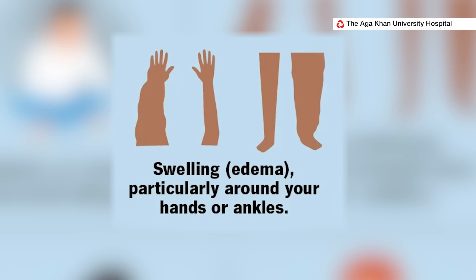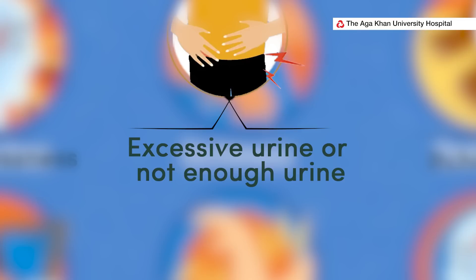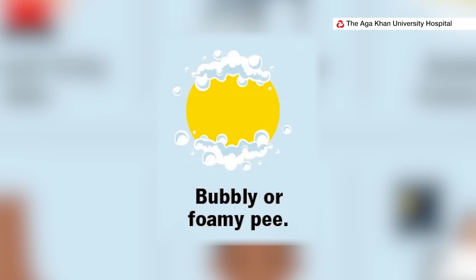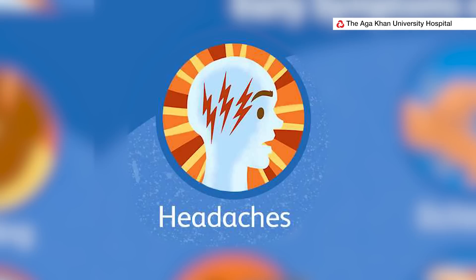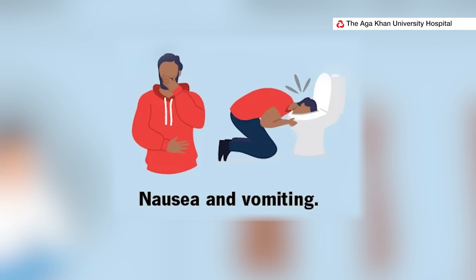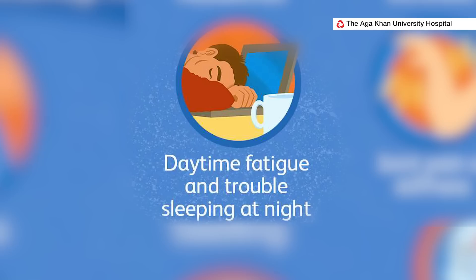Patients will sometimes present with a sudden swelling of their lower limbs or their faces. They'll report a change in urine — either a reduction in the amount, a change in color, blood in the urine, or foamy urine. They might have headaches, high blood pressure, nausea and vomiting especially when there is a lot of build-up of toxic waste in the body, poor sleep, and fatigue among others.